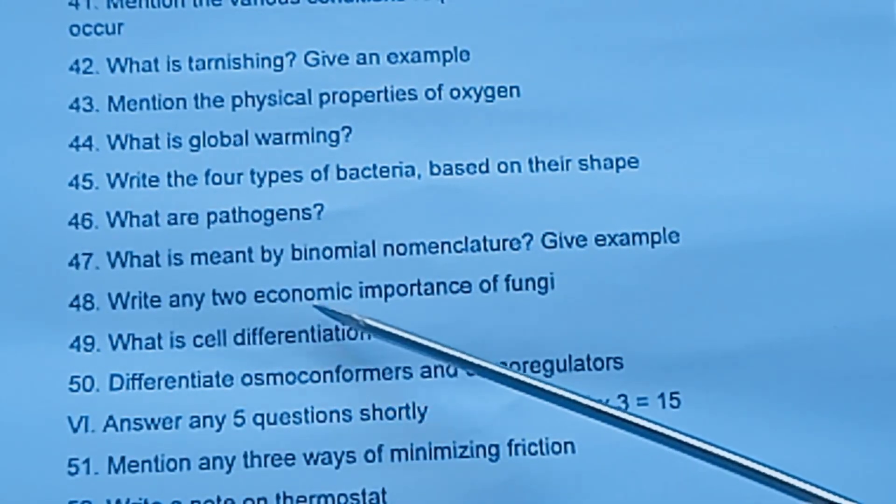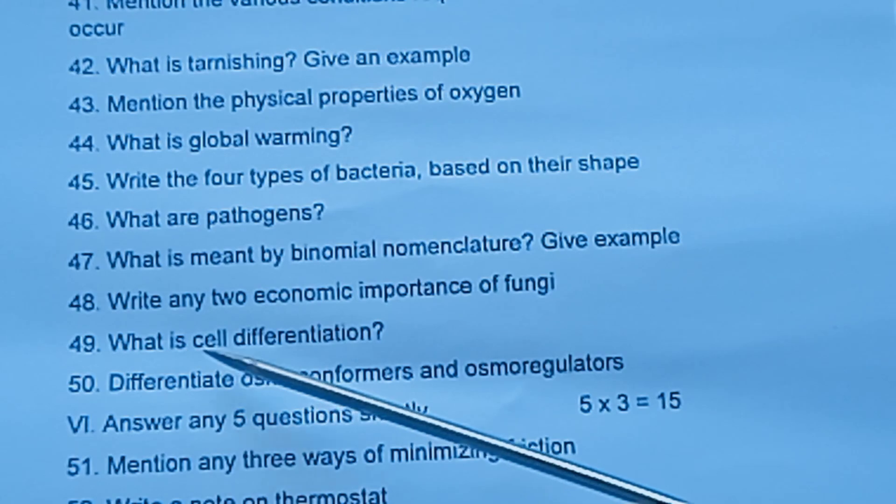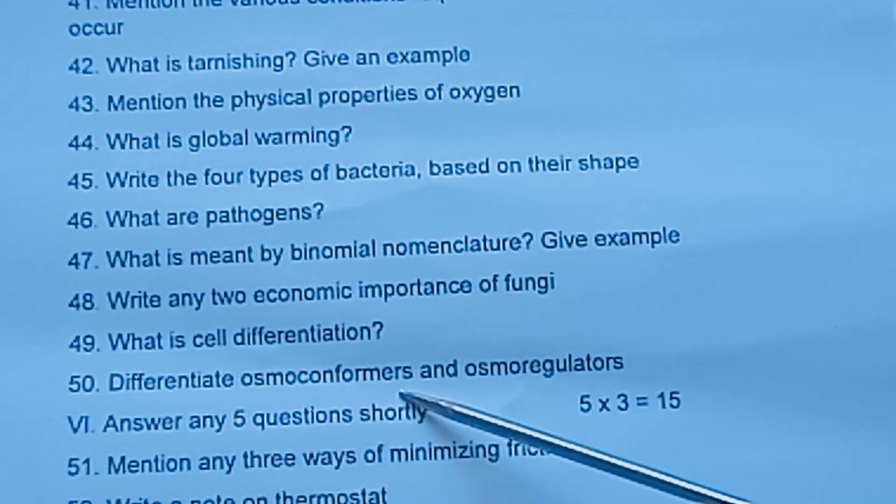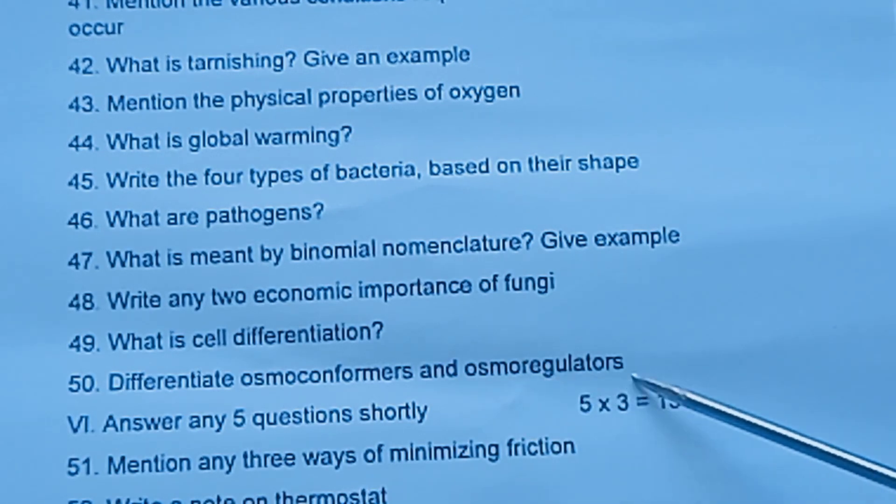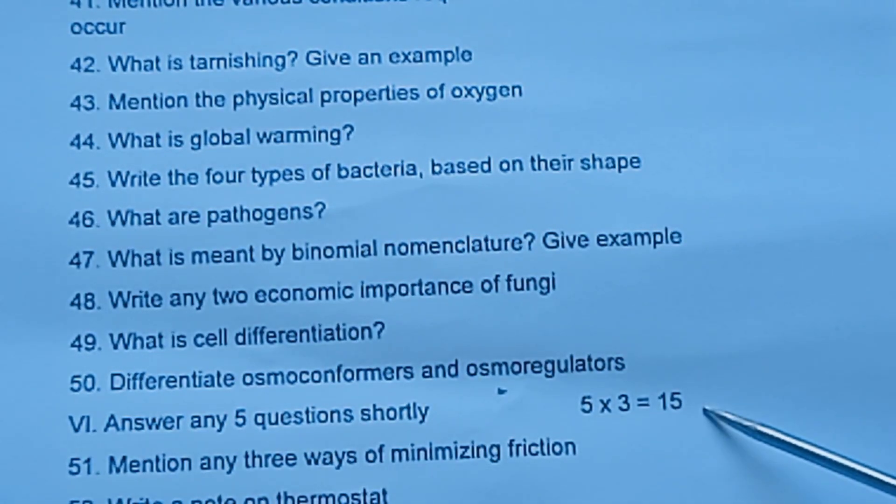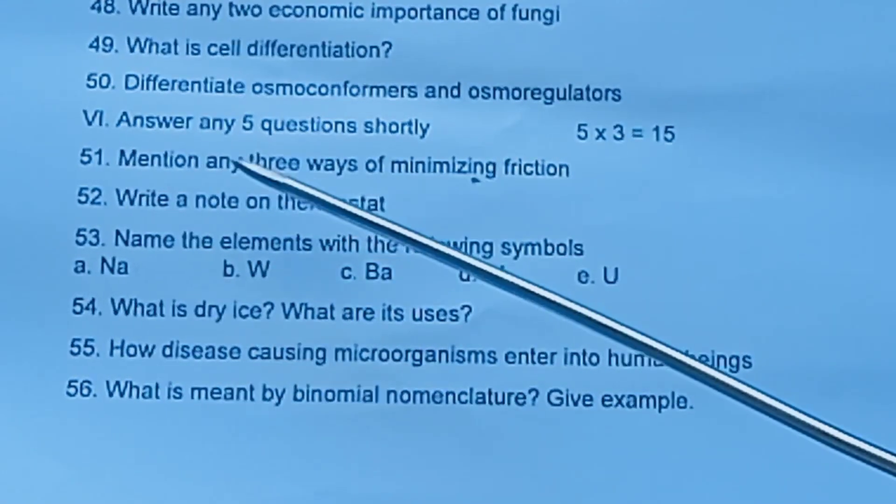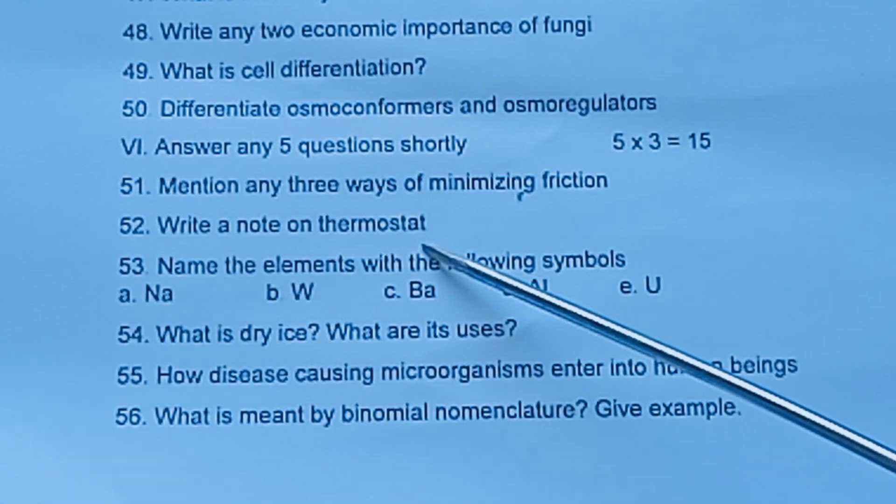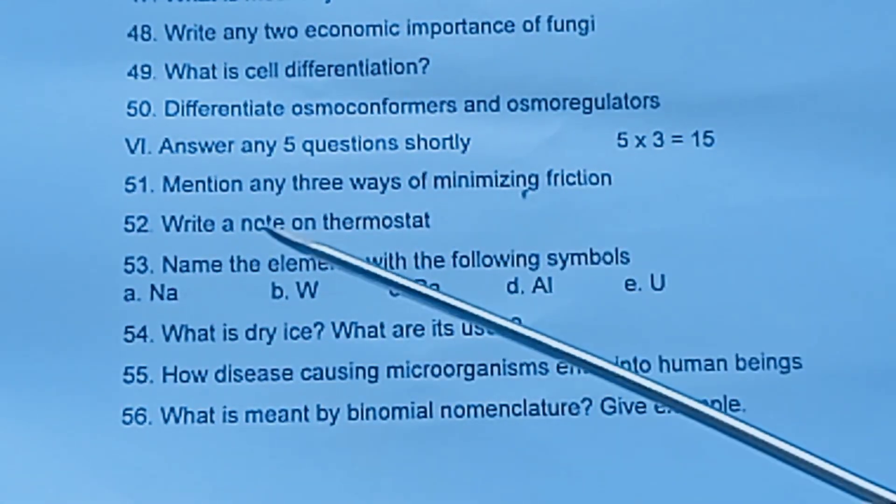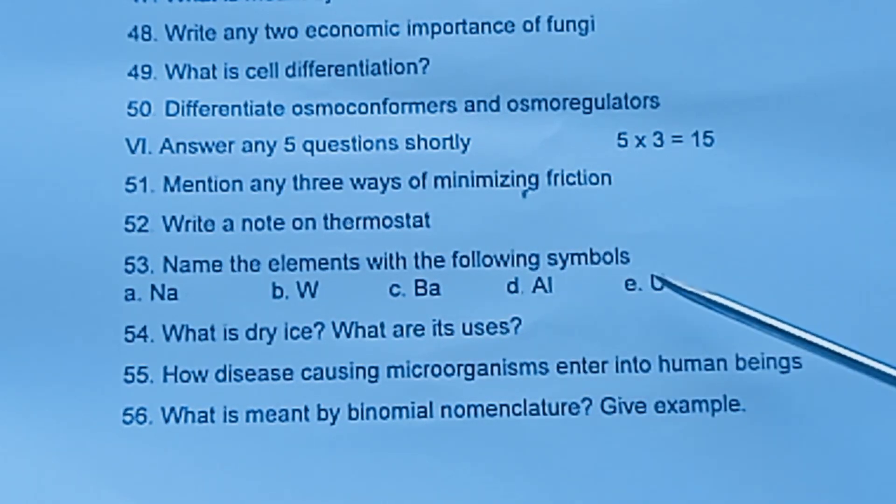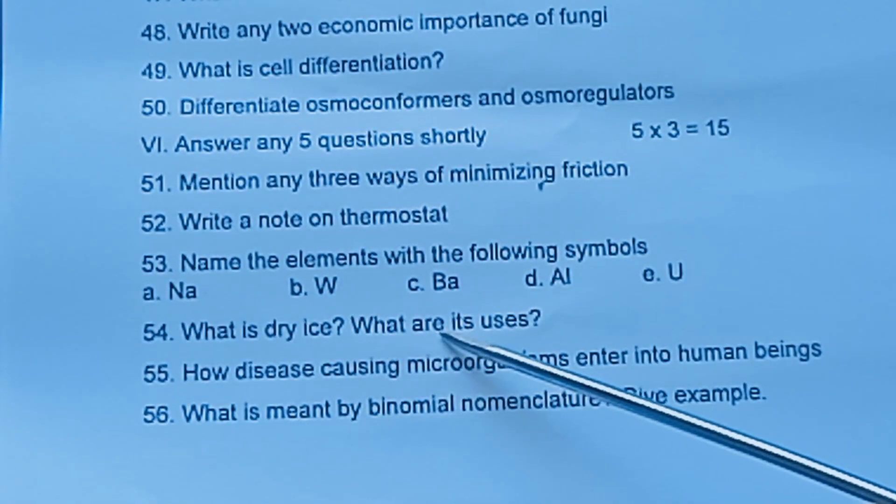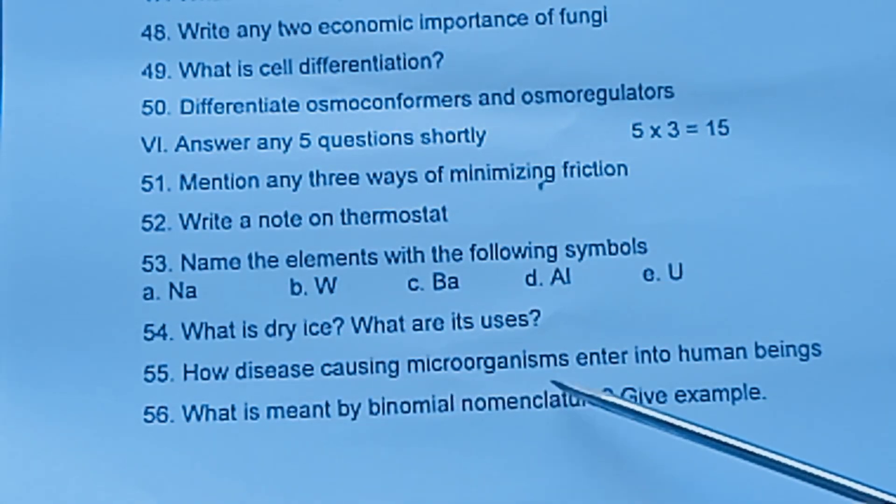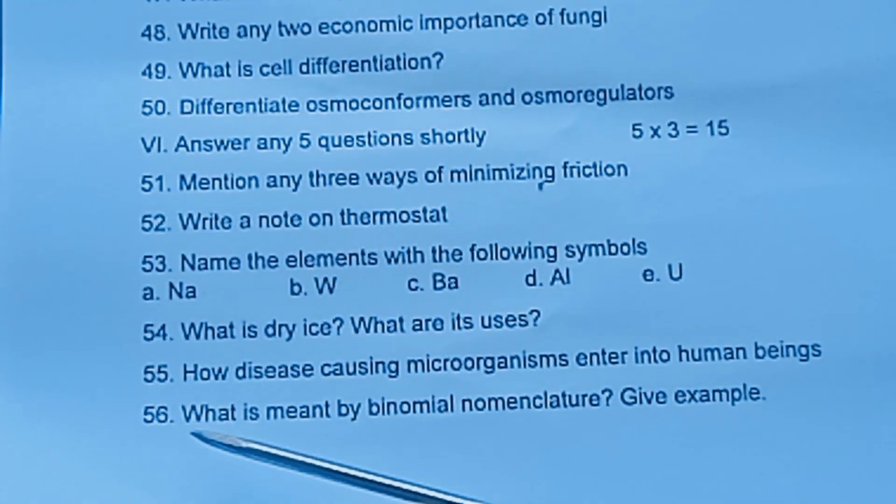Question 48: Write any two economic importance of fungi. Question 49: What is cell differentiation? Question 50: Differentiate osmoconformers and osmoregulators. Question 51: Mention any three ways of minimizing friction. Question 52: Write a note on thermostat. Question 53: Name the elements with the following symbols. Question 54: What is dry ice? What are its uses? Question 55: How disease-causing microorganisms enter into human beings? Question 56: What is meant by binomial nomenclature? Give example.